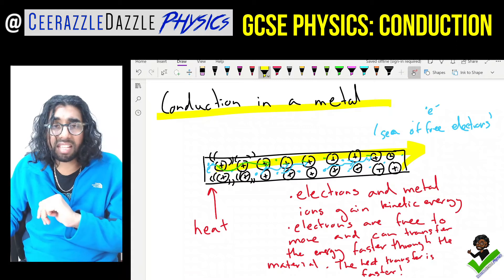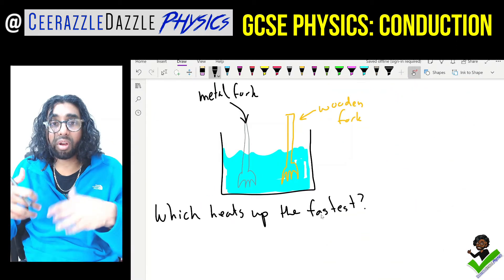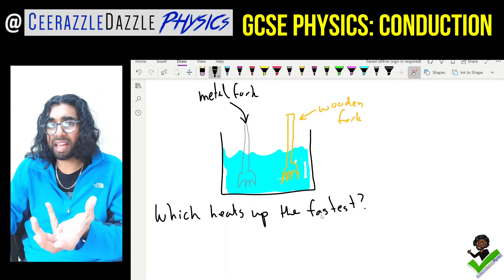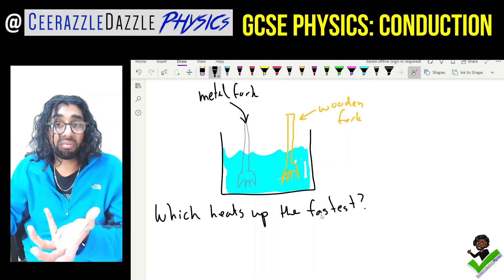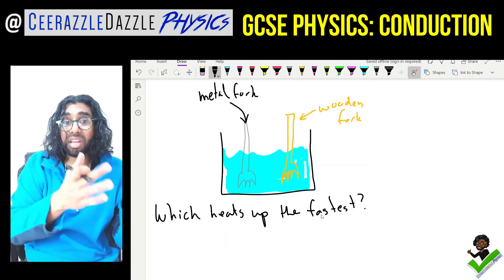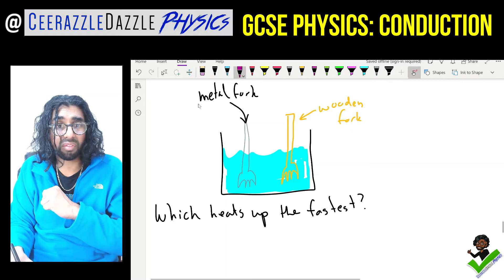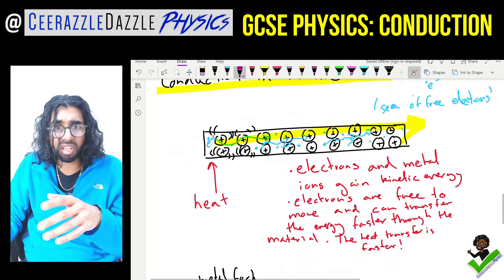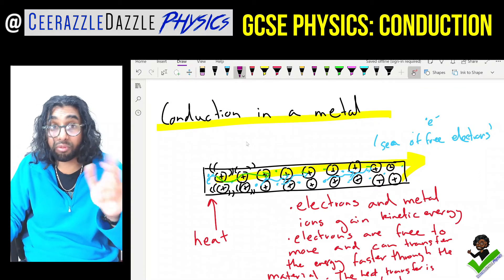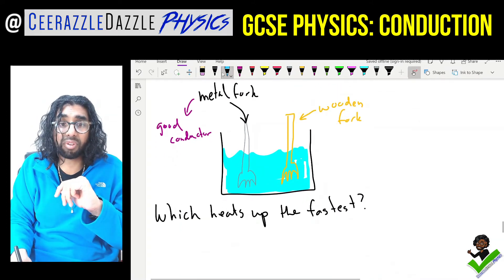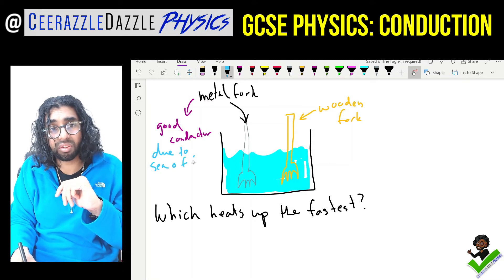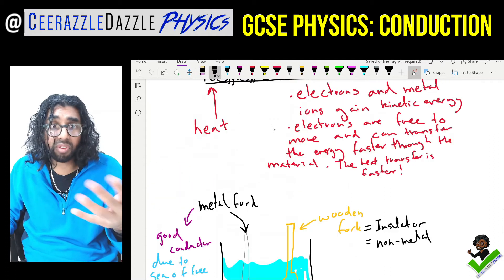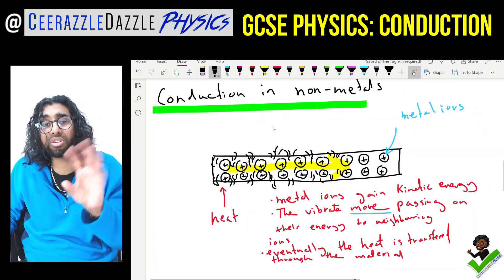Let's test your understanding with a real-life example. Your mom makes you a cup of tea and places a wooden spoon and a metal spoon in it at the same time. You touch the tops — which one is hotter? The metal spoon, because metals are good conductors due to their sea of free electrons. Wood is an insulator and a non-metal; it will transfer heat, but at a much slower rate since only the metal ions are moving and not the electrons.